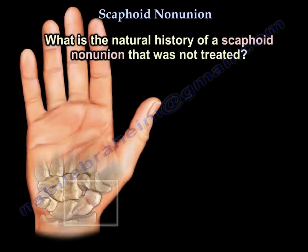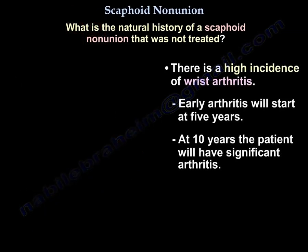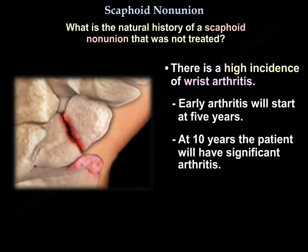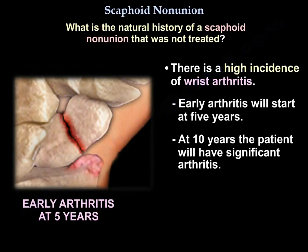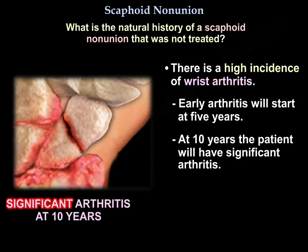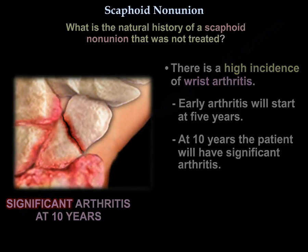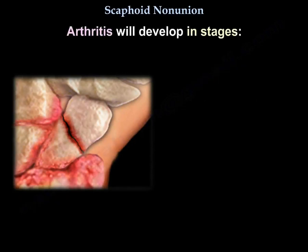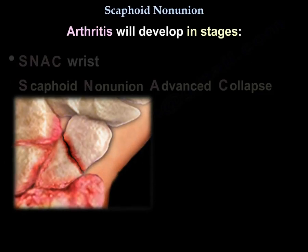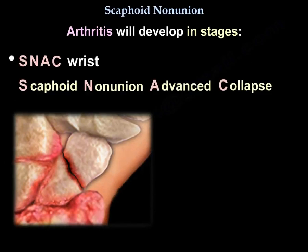What is the natural history of scaphoid non-union that was not treated? There is a high incidence of wrist arthritis. Early arthritis will start at 5 years, and at 10 years the patient will have significant arthritis. Arthritis develops in stages, known as SNAC wrist — Scaphoid Non-union Advanced Collapse.